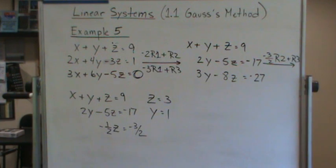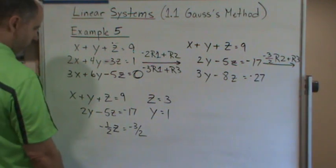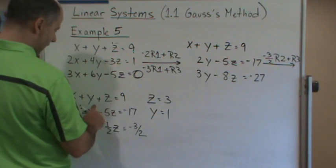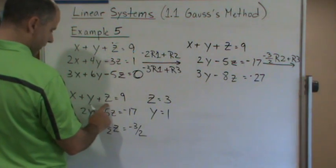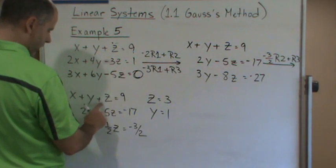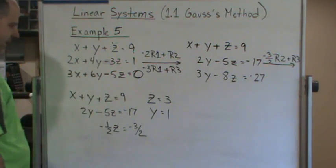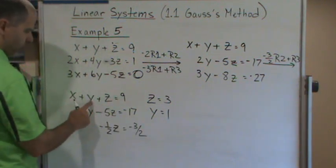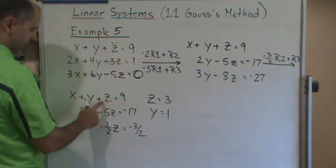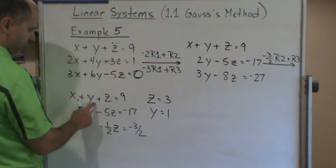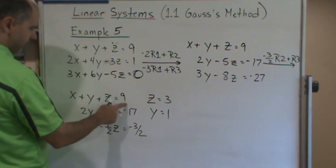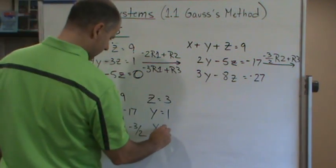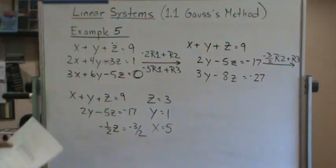Now we substitute y equals negative 1 and z equals 3 into the first equation to solve for x. That gives x plus negative 1 plus 3 equals 9, so x plus 2 equals 9... wait, hold on.